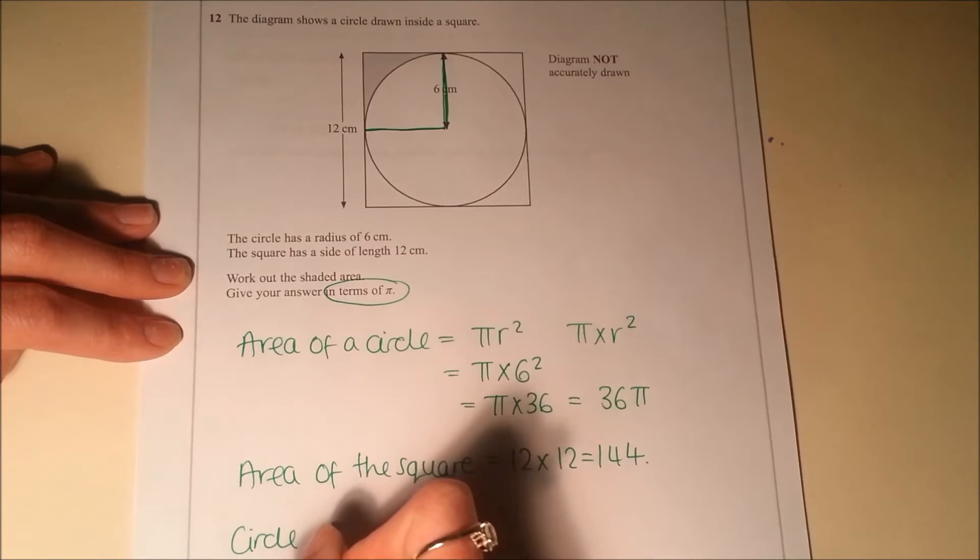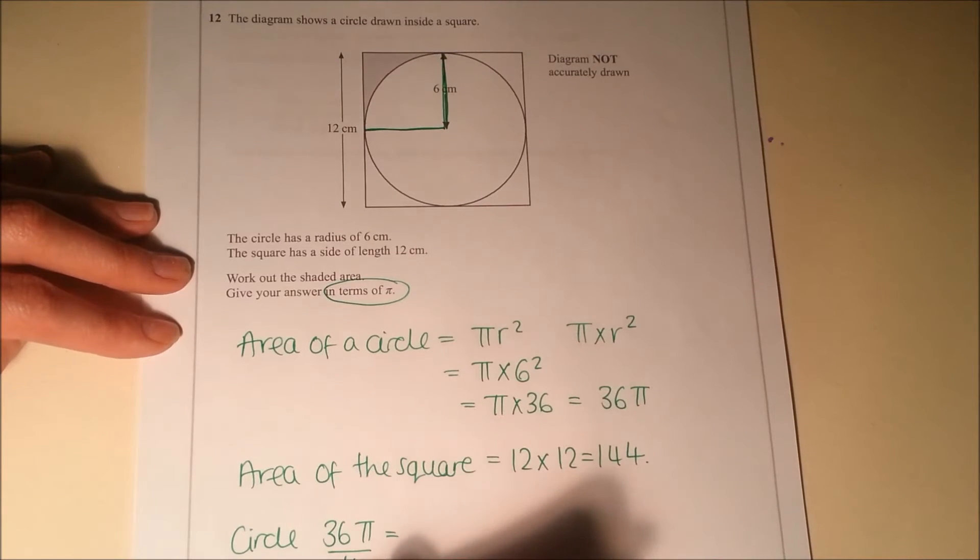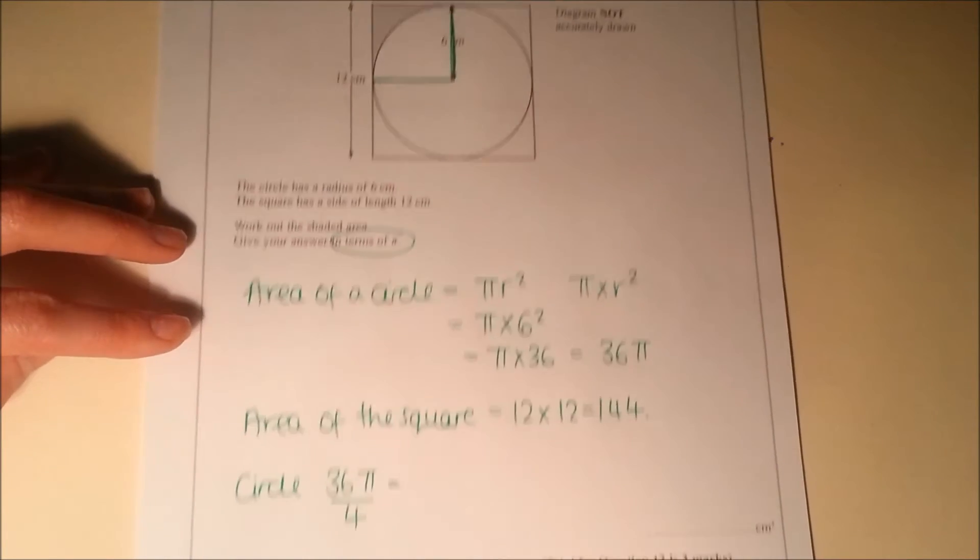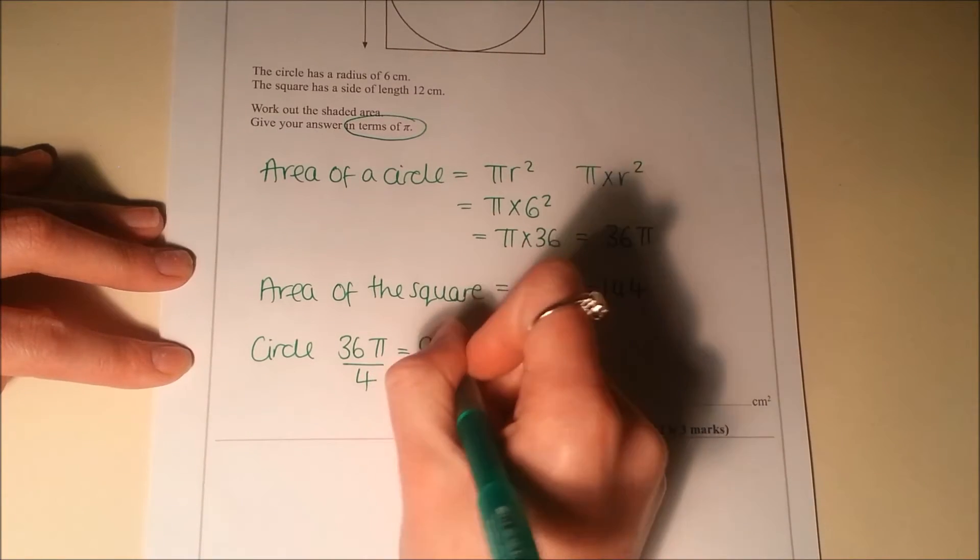So what I'm going to need to do is quarter each of my answers. So for the circle, I'm going to have 36π divided by 4, well, 36 divided by 4. Let's actually make sure you can see that. So 36 divided by 4 is 9, so it'll be 9π.